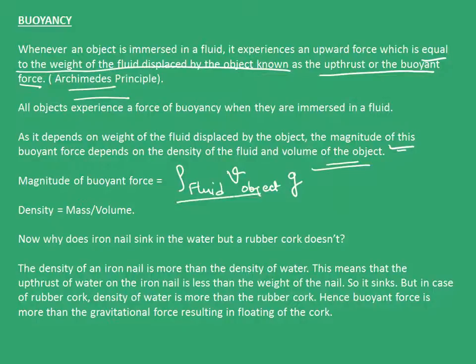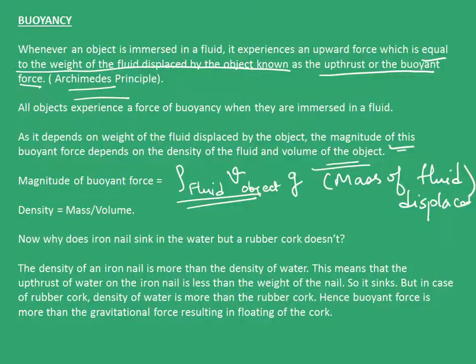Magnitude of buoyant force is ρ_fluid × V_object × g. So ρV here is the mass of fluid displaced. Density is mass upon volume. Now, why does an iron nail sink in water but a rubber cork doesn't?